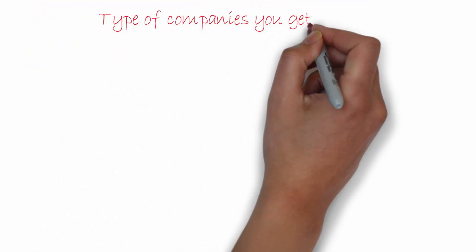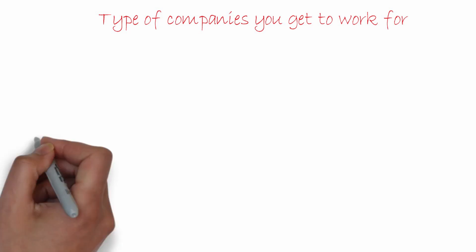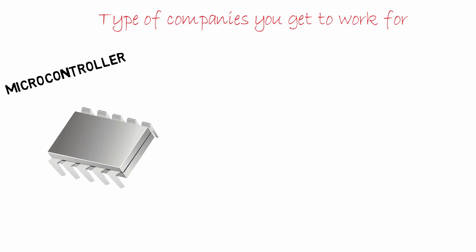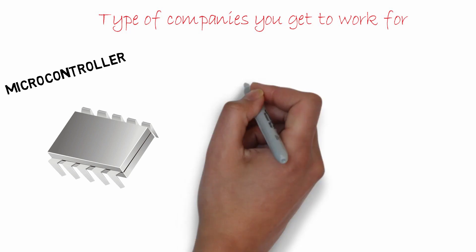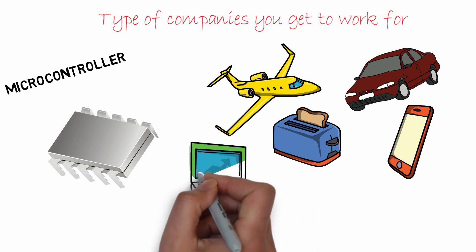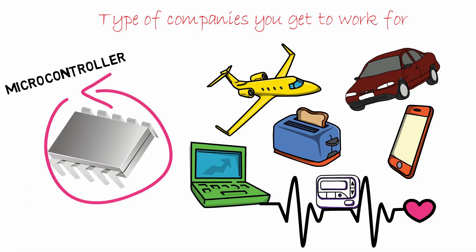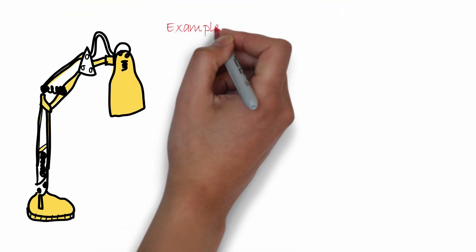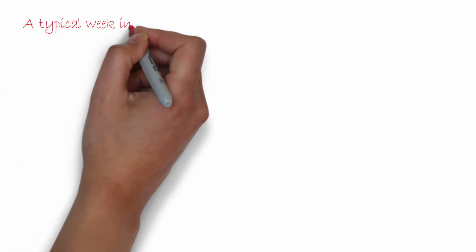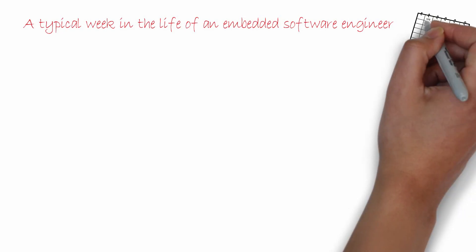Types of companies you get to work for: Any company that produces electronic devices with a microcontroller is going to need embedded software. Be it airlines, automobiles, home appliances, smartphones, laptops, or medical devices — they all use microcontrollers in their end products and thus need embedded developers. Some famous examples of such companies include Nokia, Apple, Samsung, LG, and HP.